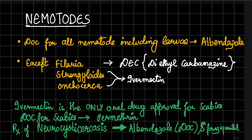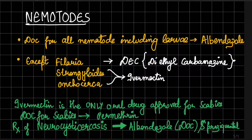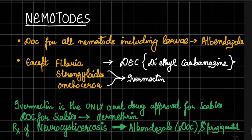Ivermectin is the only oral drug approved for scabies, however the drug of choice for scabies is permethrin. The treatment of neurocysticercosis is albendazole as the drug of choice, along with praziquantel.